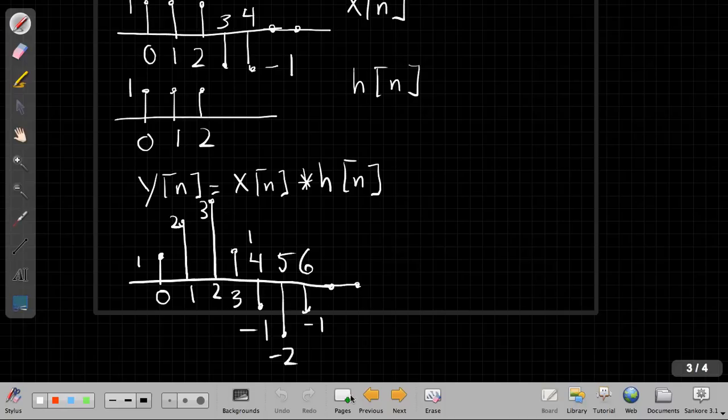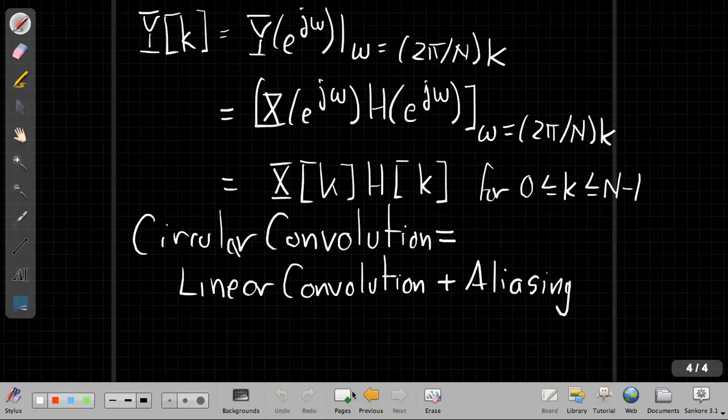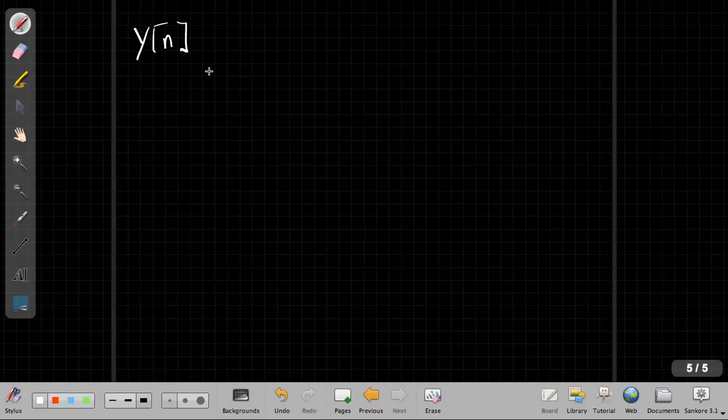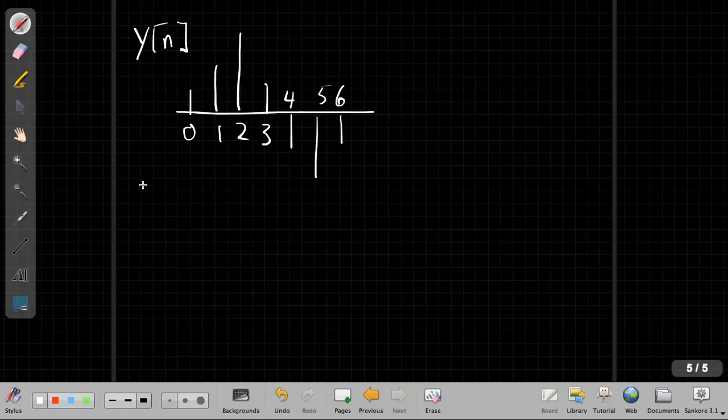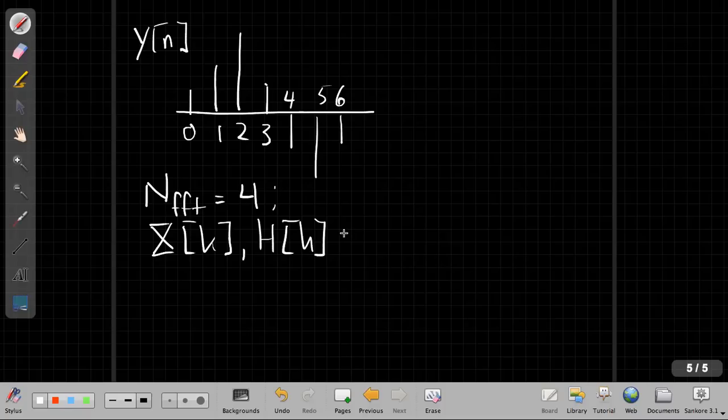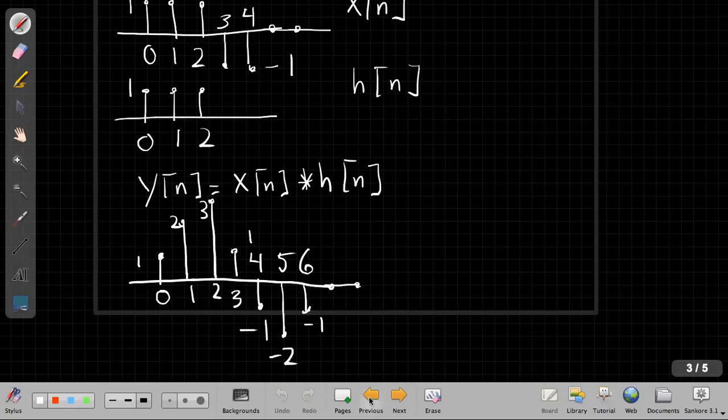We know that this is the same as computing linear convolution, and then we sampled in frequency. We're going to take that signal and make it periodic every capital N. As long as capital N is bigger than the output of that Y, we should be okay. So our signal went 1, 2, 3, 1, minus 1, minus 2, minus 1.